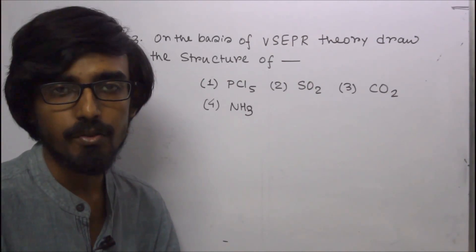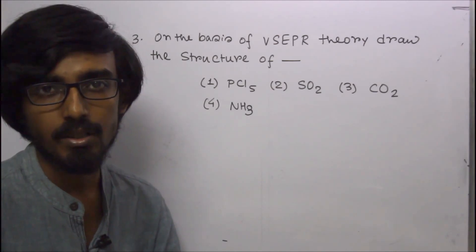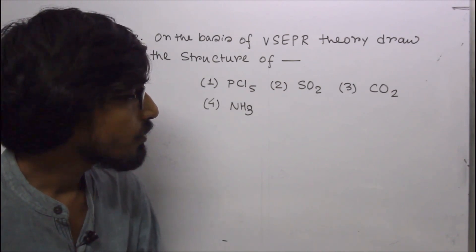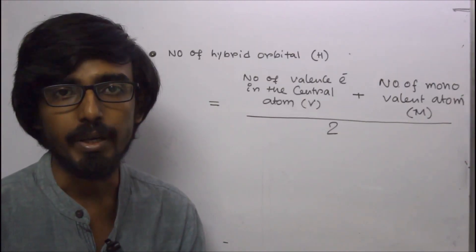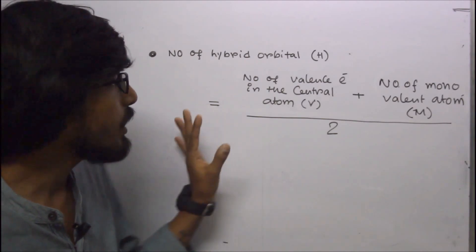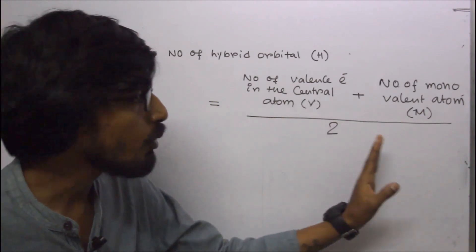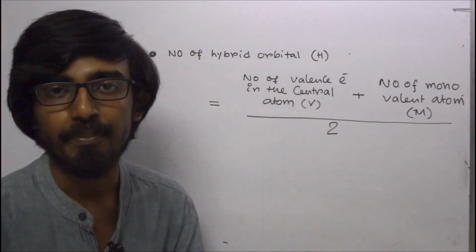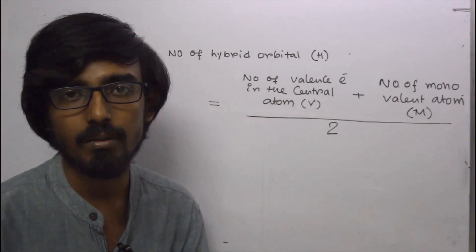Next question: on the basis of VSEPR theory, draw the structure of PCl5, SO2, CO2, and ammonia. We use the formula: number of hybrid orbitals = (number of valence electrons in the central atom + number of monovalent atoms) ÷ 2. This formula finds the hybridization of the central atom for a neutral compound.